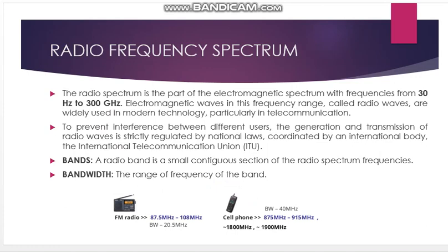The radio frequency spectrum is a part of the electromagnetic spectrum. The RF spectrum covers frequencies varying from 30 Hz to 300 GHz. In a communication system, the transmission and reception done between frequencies from 30 Hz to 300 GHz are known as the radio frequency spectrum, and in communication theory, transmitters and receivers operating in this range are known as radio engineering.